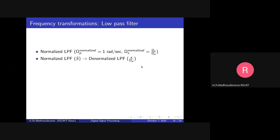First we will design a Butterworth low pass filter or Chebyshev low pass filter with the following specifications: Omega P normalized, Delta P, Omega S normalized, Delta S. With these specifications we will design the filter first. After that we will simply do this transformation — replace capital S with small s by Omega P. If you do this transformation, the passband cutoff becomes Omega P radians per second and the stopband becomes Omega S radians per second.